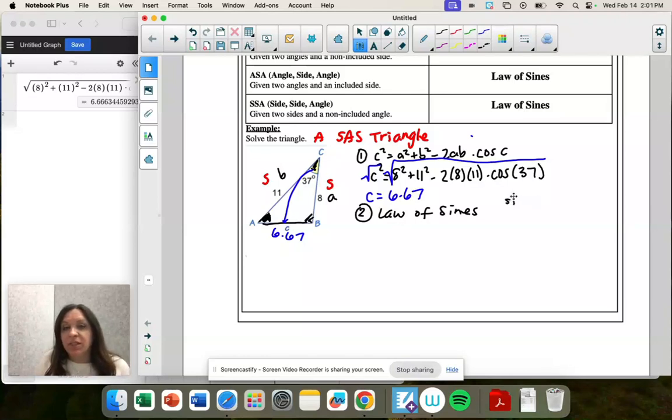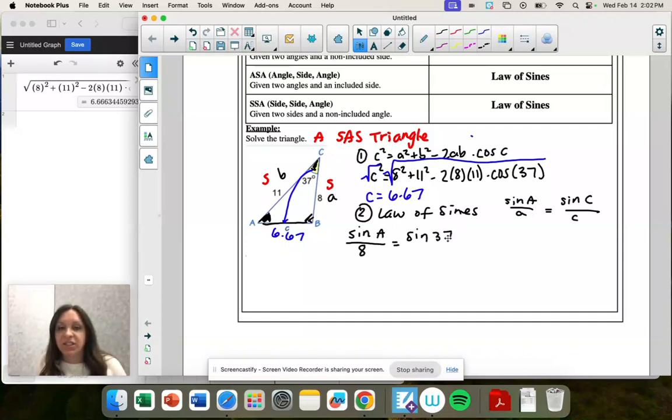So we're going to use sine of A over A. And then C and C are going to help us find that missing angle. So angle A is what we're trying to solve for. Side A is 8. Angle C is 37. And side C, we just found a 6.67.